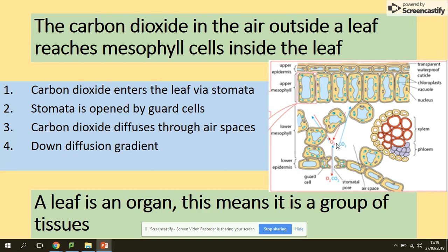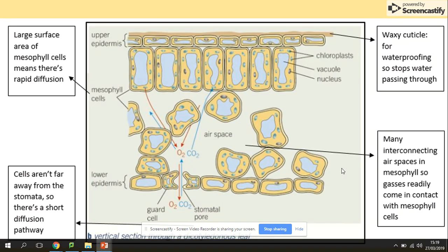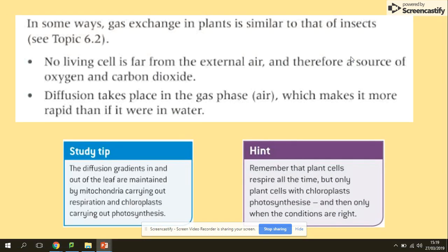Sometimes the tricky question asks you to explain why a leaf is an organ. This is of course because it is a group of tissues working together. One more time, main adaptations here: stomata, to make sure that diffusion pathway is taking place down the concentration gradient. Here, lots of air spaces for rapid gas exchange. Then we've got the upper epidermis with the waxy cuticle which is waterproof, so prevents evaporation and transpiration.